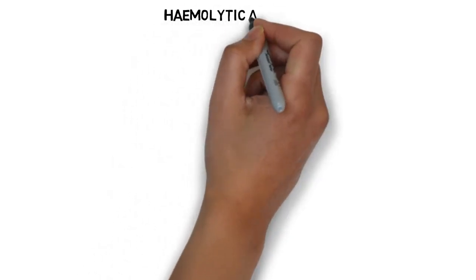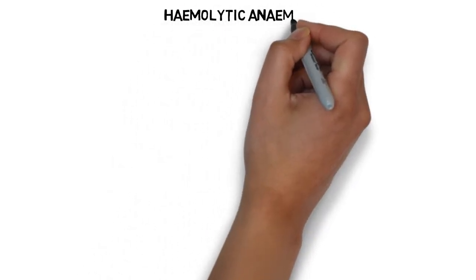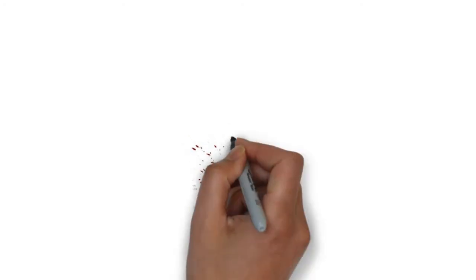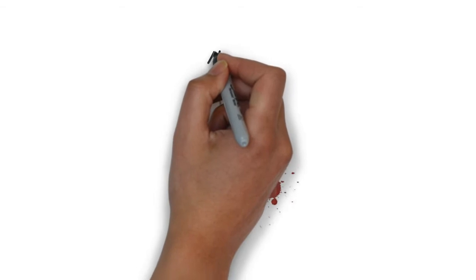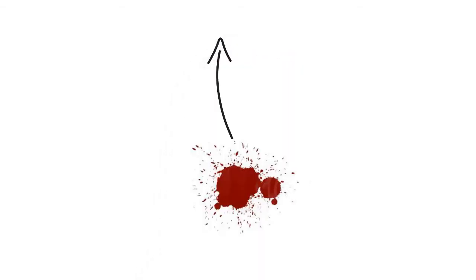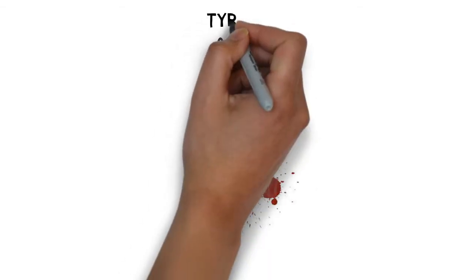Hemolytic anemias are a group of anemias where there is an early destruction of red blood cells. This leads to a mismatch between red blood cell production and destruction. The types of hemolytic anemias can be broken into two: those that are acquired and those that are congenital.